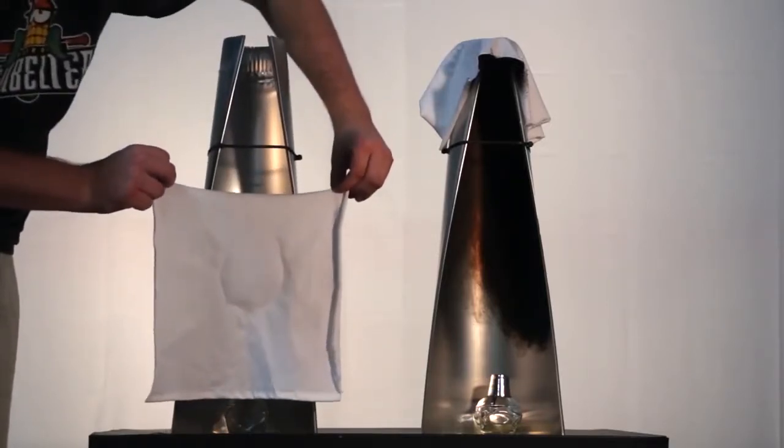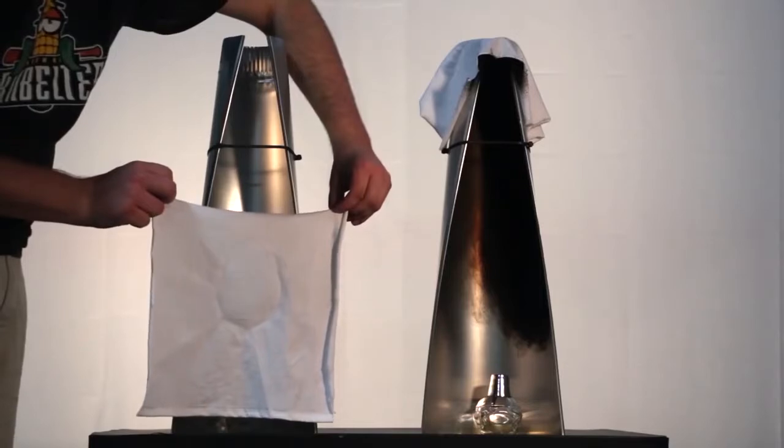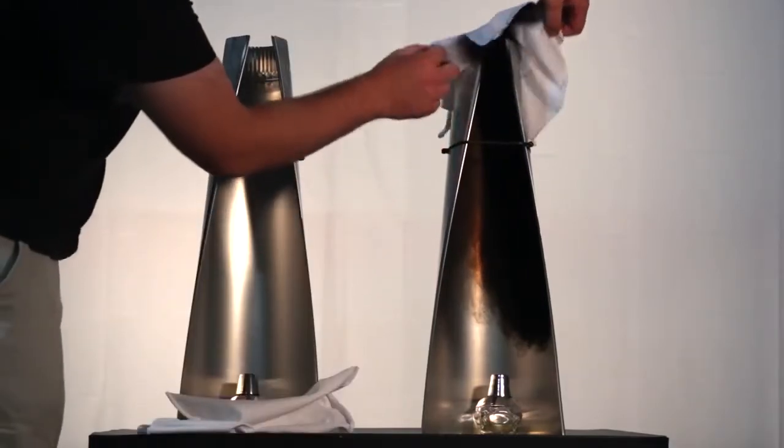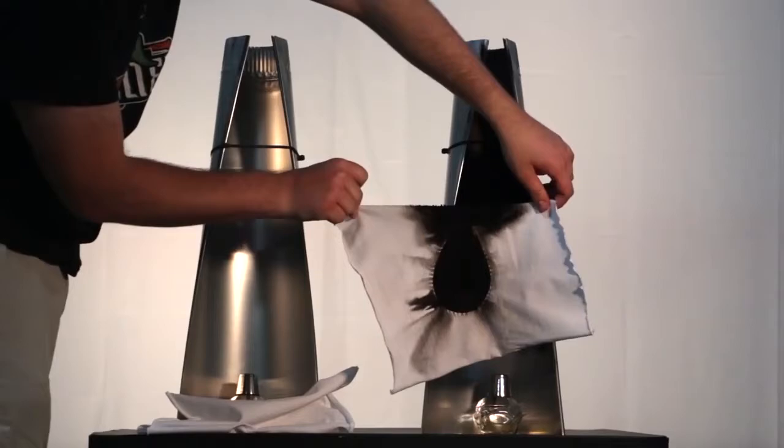The ethanol cloth is just as clean and white as it was 30 minutes ago. The gasoline cloth on the other hand is covered in a thick layer of black soot.